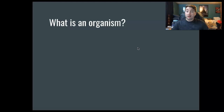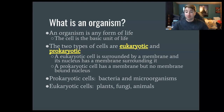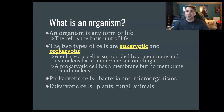So what is an organism? An organism is going to be any living thing, basically. There are two different cell types: eukaryotic cells and prokaryotic cells. Prokaryotic cells are going to be your bacteria, protists, and some single-celled organisms. The main difference is that eukaryotic cells have a membrane-bound nucleus, while prokaryotic cells do not — their DNA is just kind of floating around in the cell. Prokaryotic cells are bacteria and microorganisms, and eukaryotic cells are plants, fungi, and animals.